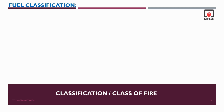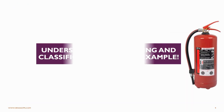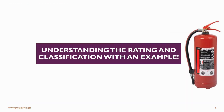Class K fires are fires in cooking appliances that involve combustible cooking media such as vegetable oils, animal oils, and fats. In the next slide, we are going to understand the rating and classification with an example.